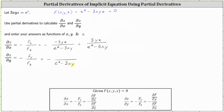The numerator is going to be the partial of F with respect to y. So now we differentiate e to the z minus 3xyz with respect to y, treating x and z as constants. The derivative of e to the z with respect to y is zero, and the derivative of negative 3xyz with respect to y is negative 3xz, because the derivative of y with respect to y is one. Again, we have two negatives here that simplify to a positive. The partial of z with respect to y is 3xz divided by the quantity e to the z minus 3xy.